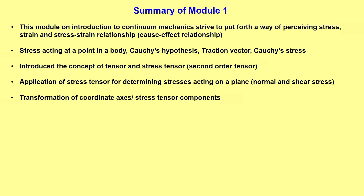Then came a very important aspect: the transformation of coordinate axes, which was critical for evolving principal stresses. We understood how given stress components can be transformed to an altogether different set of orthogonal axes. Then came the determination of principal stresses based on that transformation, and we discussed how to evolve principal stresses by diagonalizing the given stress tensor.